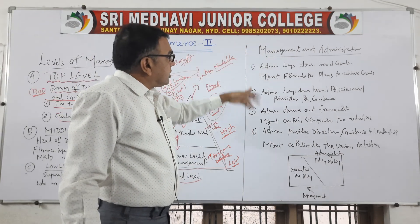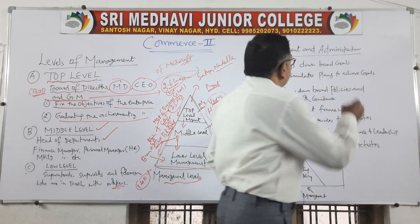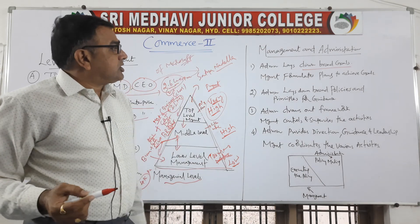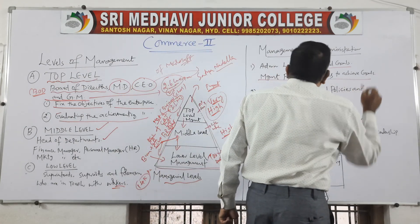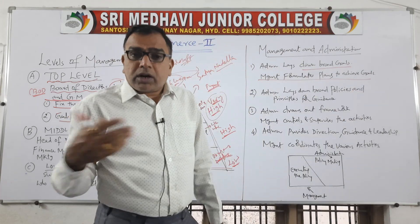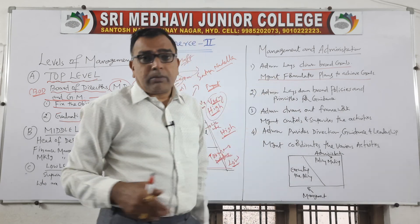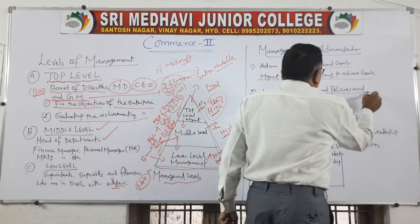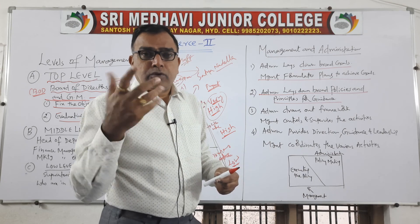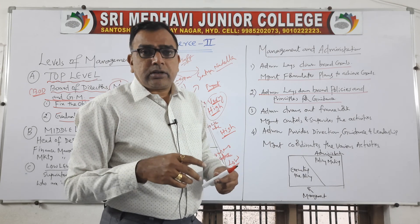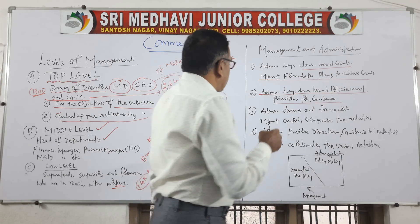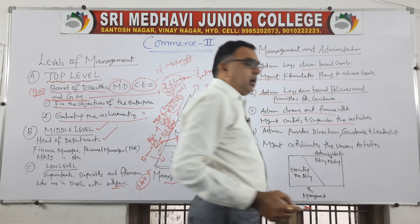What are the differences? Administration lays down broad goals — what purpose your enterprise was established for. Management formulates plans to achieve those goals — how they are to be achieved. Administration also lays down broad policies and principles for guidance; if you do not have principles and policies, you cannot achieve targets. Administration draws out the framework; management controls and supervises the activities, ensuring all employees work according to the administration's guidelines.